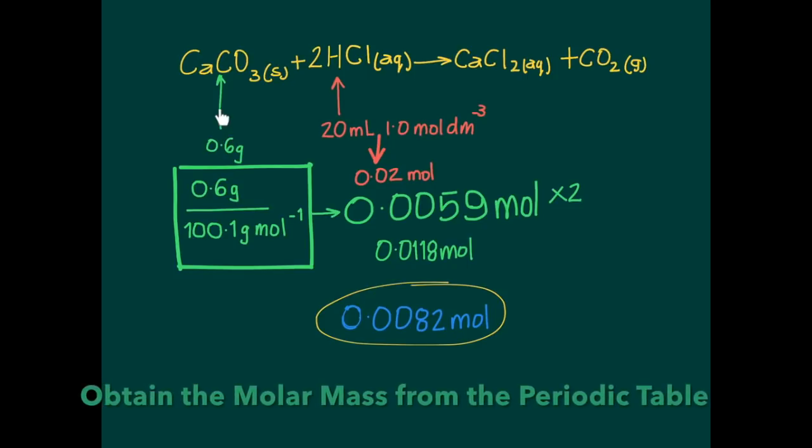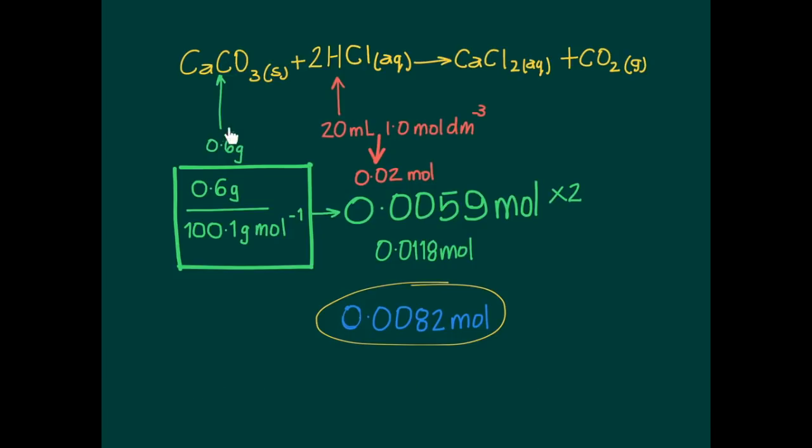So we begin with 0.6 grams of eggshell, assuming that the entire 0.6 grams is made of calcium carbonate. Our technique requires this eggshell to be crushed into a powder, and we can calculate that 0.6 grams is made up of 0.0059 moles of calcium carbonate.